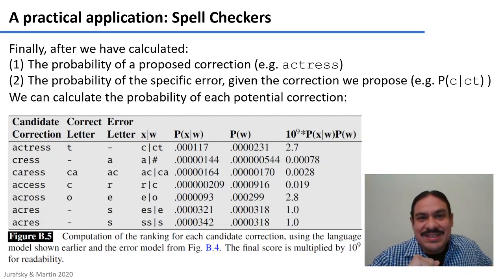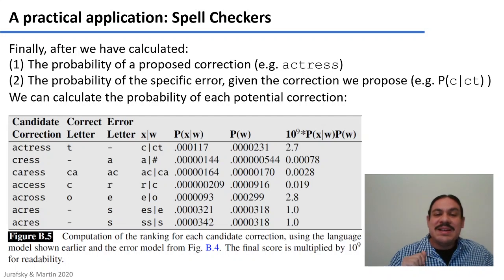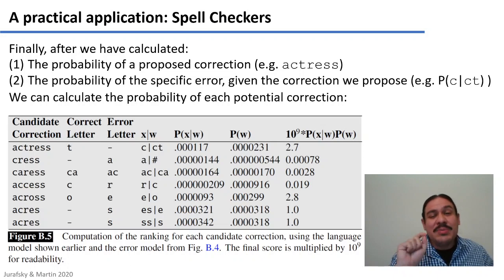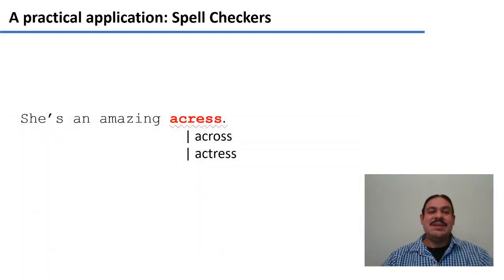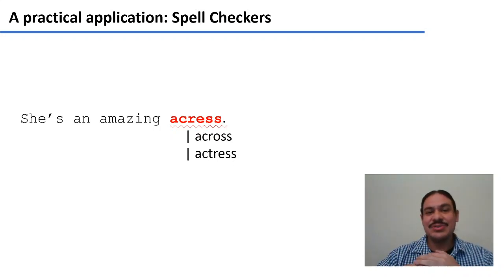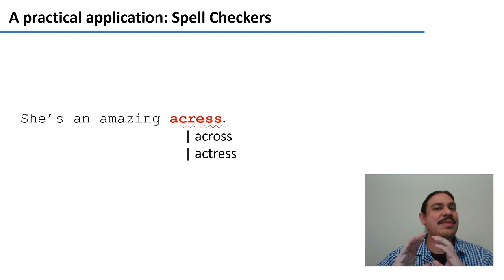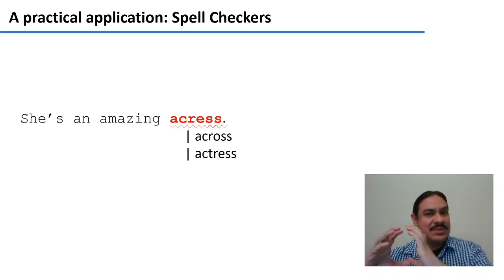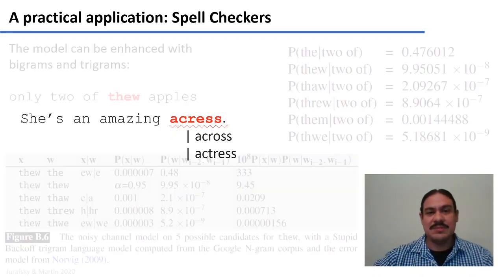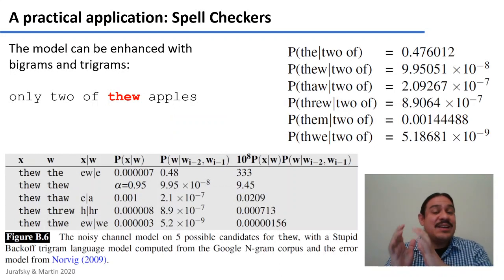Notice that 'across' is also an odd candidate in our list of potential corrections. Because it has a very high unigram probability, the probability of it being correct is actually a little bit higher than for 'actress'. So we could end up with a system that proposes 'she's an amazing across' instead of 'she's an amazing actress.' We're halfway there — we have a good system for predicting error probabilities, but only unigrams to measure word probability. Let's enhance that by using bigrams or even trigrams instead.